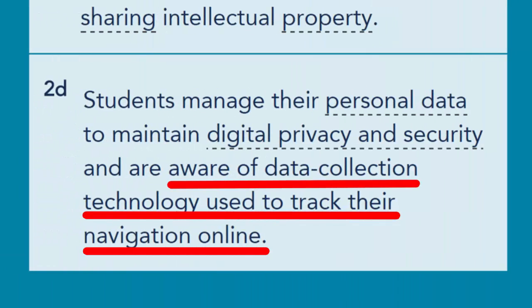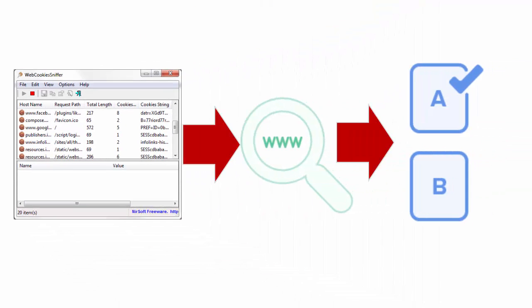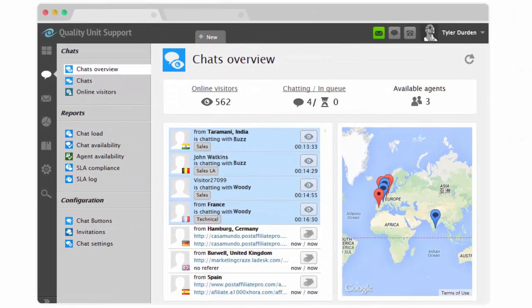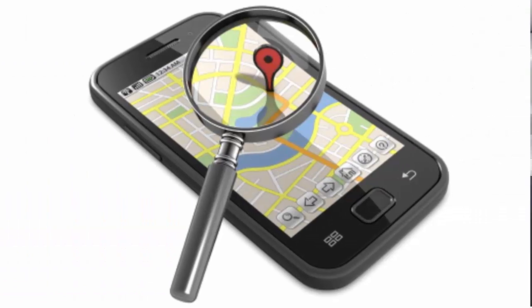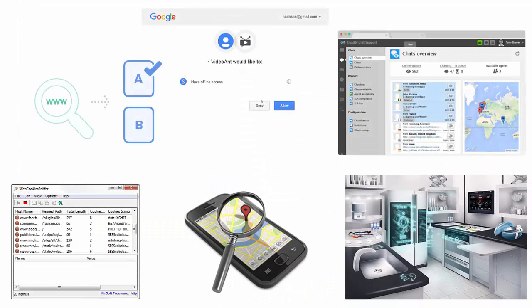Your students must also learn to be aware of data collection technology used to track their navigation online. There are entities that track an individual's personal data when using network devices — for example, website cookies, search algorithms that return results based on past searches, website analytics, GPS on cell phones, and the Internet of Things, where data is exchanged between network devices and objects. Being aware of these specific technologies that surround us in a digital age is very important for students to protect themselves and to project positive images to the world.